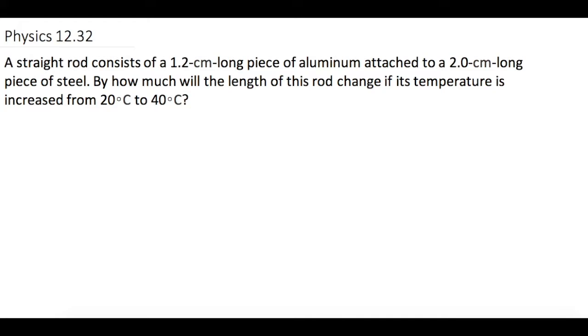A straight rod consists of a 1.2 centimeter long piece of aluminum attached to a 2 centimeter long piece of steel. By how much will the length of this rod change if its temperature is increased from 20 degrees Celsius to 40 degrees Celsius?